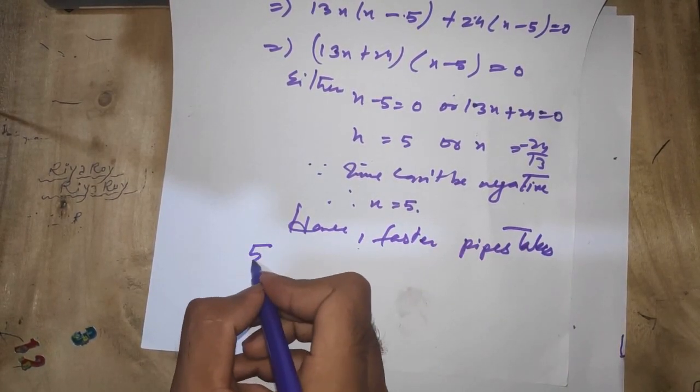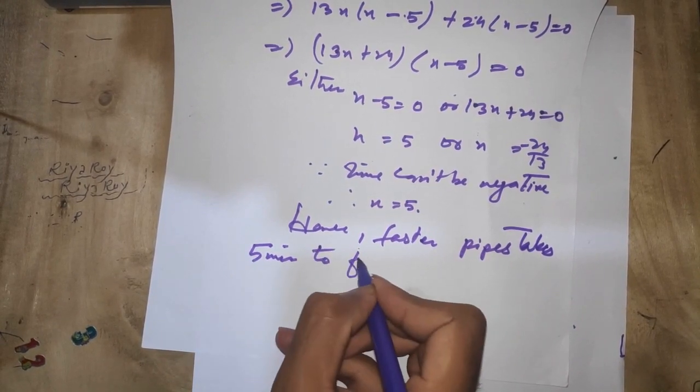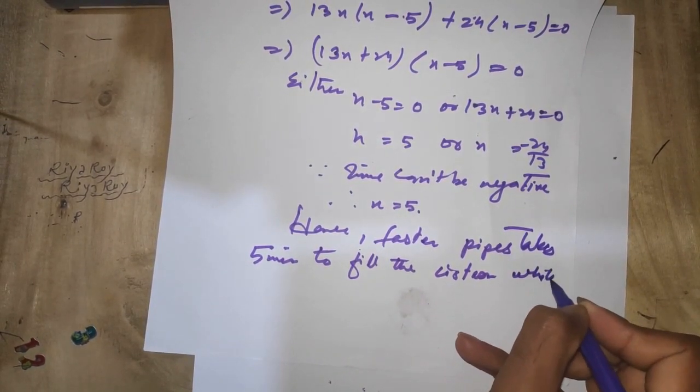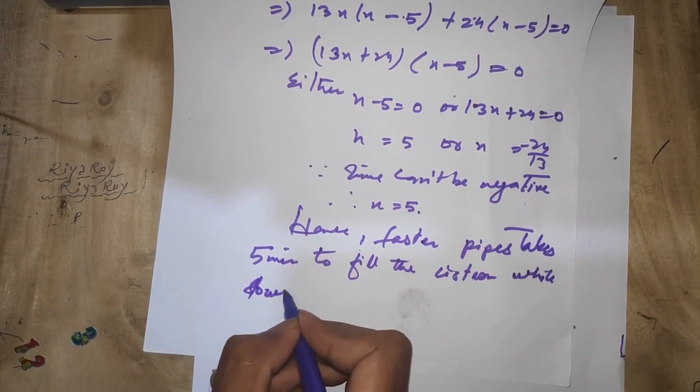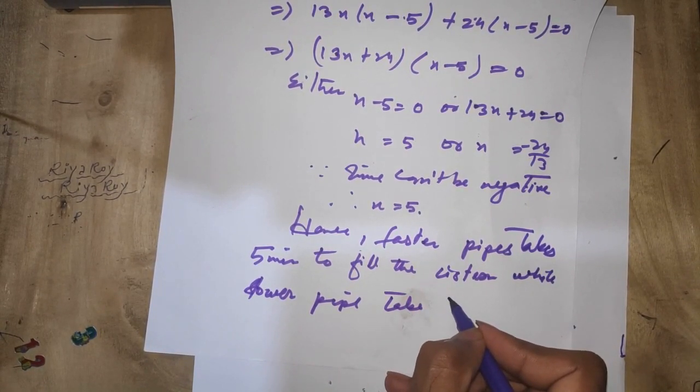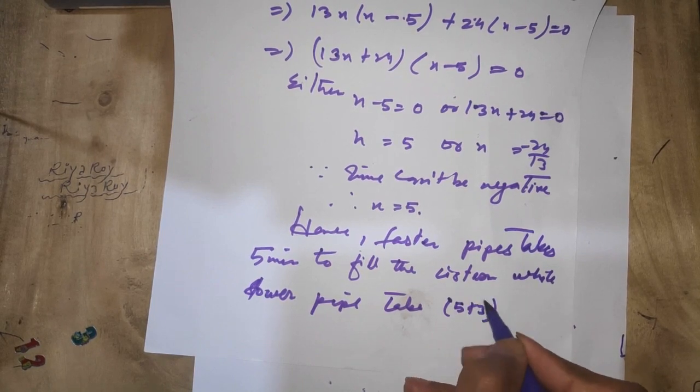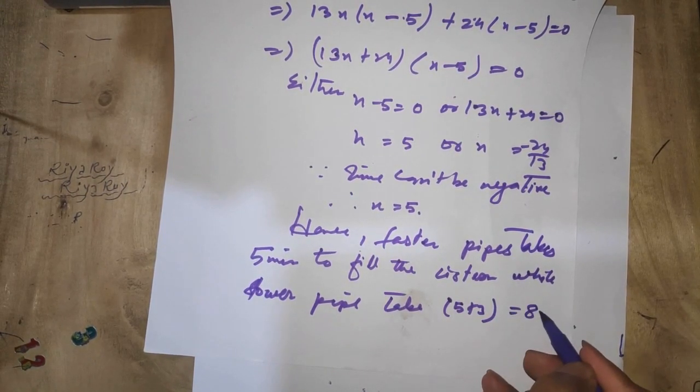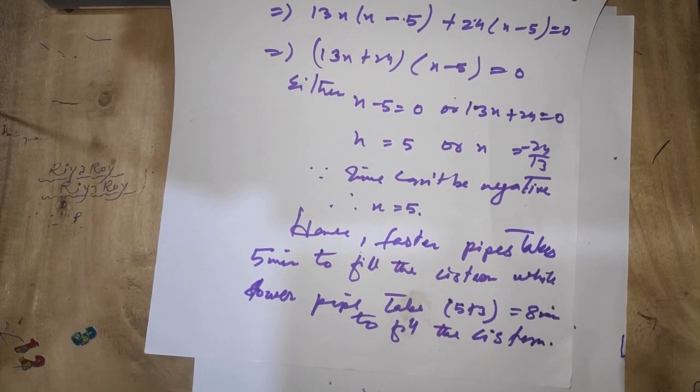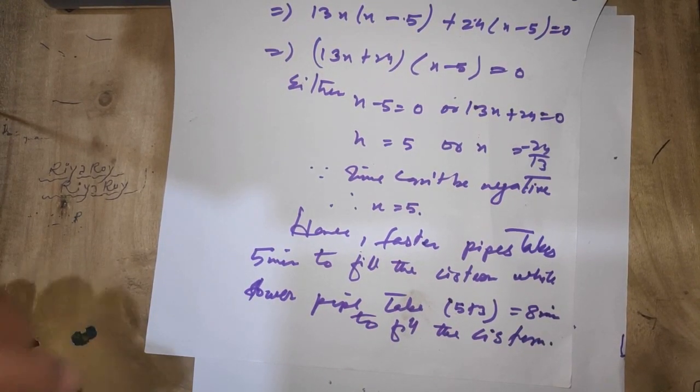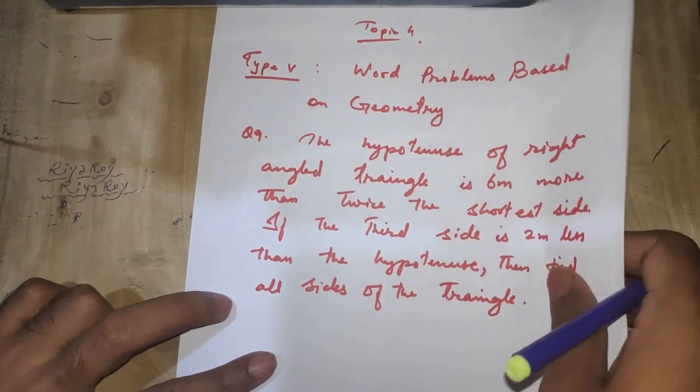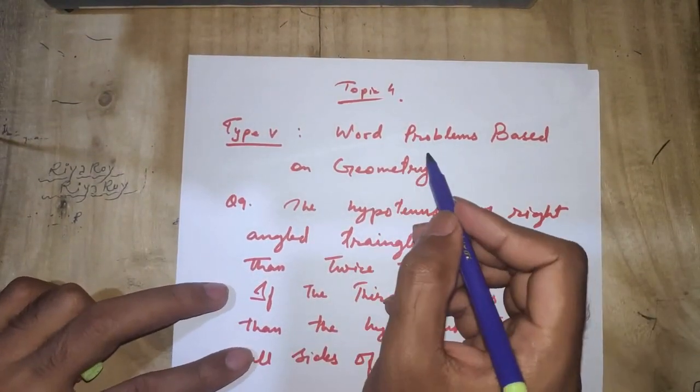Since time cannot be negative, X equals 5. Hence, the faster pipe takes 5 minutes to fill the cistern, while the slower pipe takes 5 plus 3, which is 8 minutes to fill the cistern.